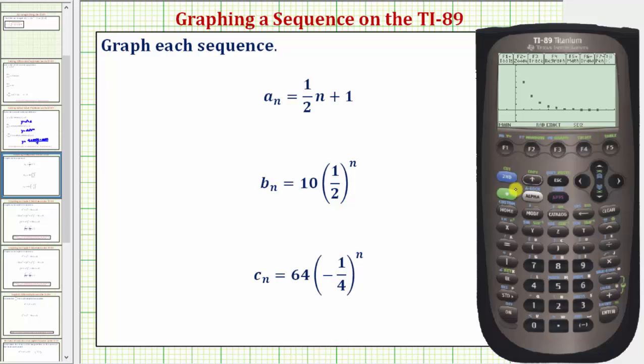Let's look at one last example. So diamond F1, up, clear. And now we'll enter the new formula which is 64, times negative one fourth, raised to the power of n, enter.